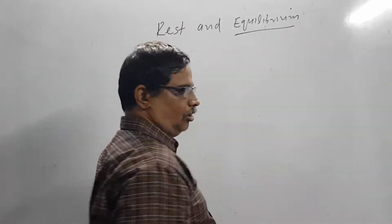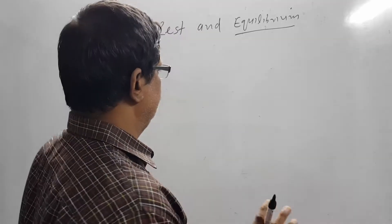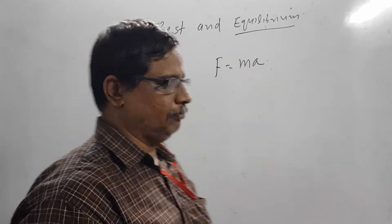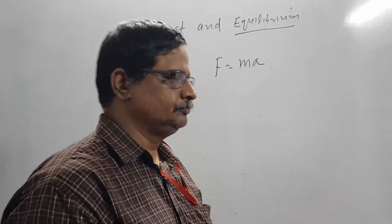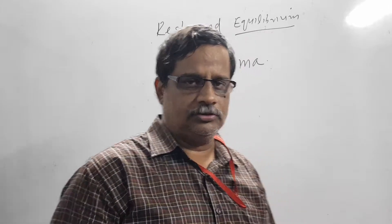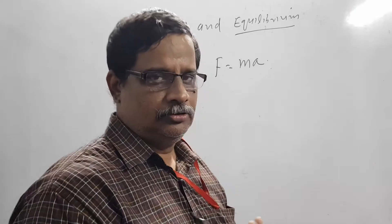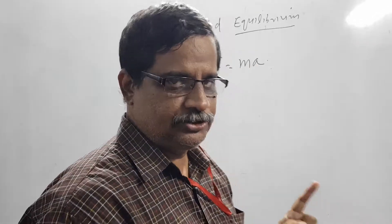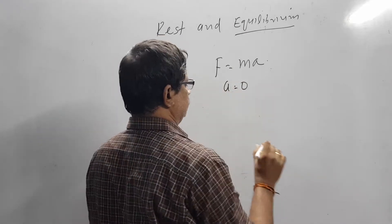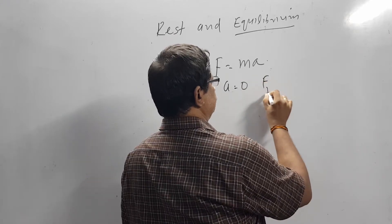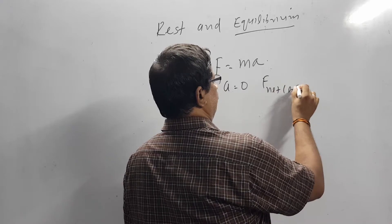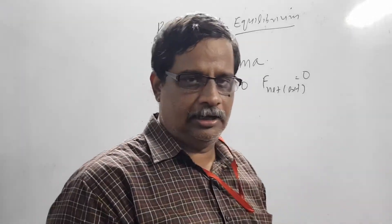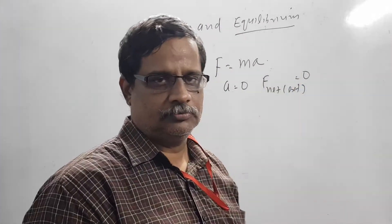All of you who have studied Newton's second law will immediately realize that according to this law the net external force acting on a body is equal to mass into acceleration. So if a body of mass M is acted upon by a net external force — those two terms are very important: 'net' and 'external' — then certainly the body will have an acceleration. So once you see that a body does not have any acceleration, the only conclusion you can make is that the net external force acting on that body is zero.